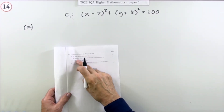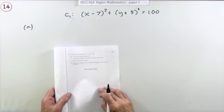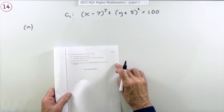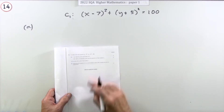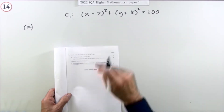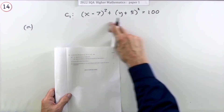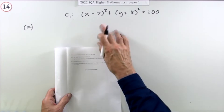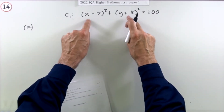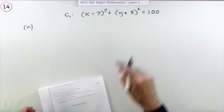Question 14, the last question in the 2022 Higher Maths paper one — six marks altogether. It's about circles, and there's the equation of a circle in the nice easy form where you can see the centre and see the radius.